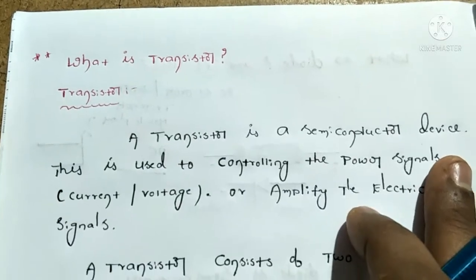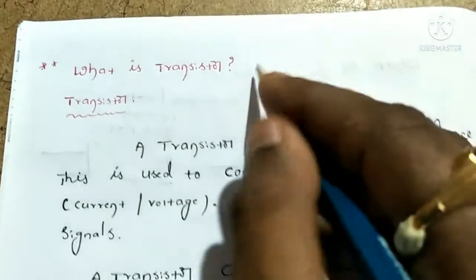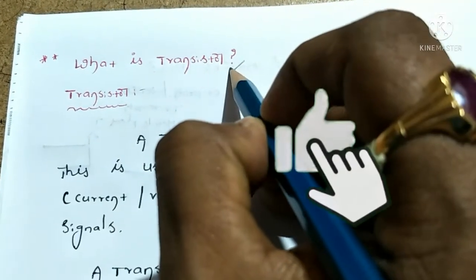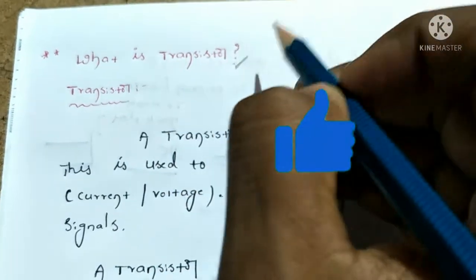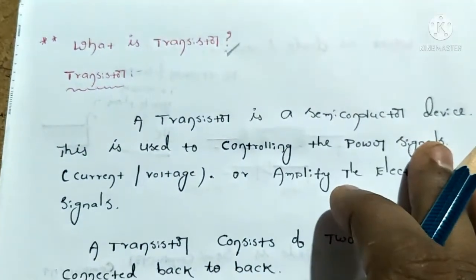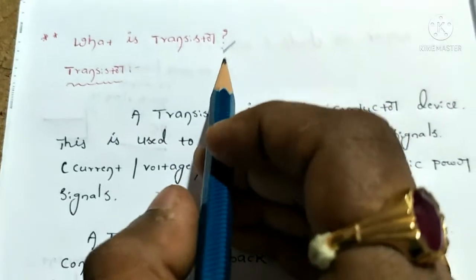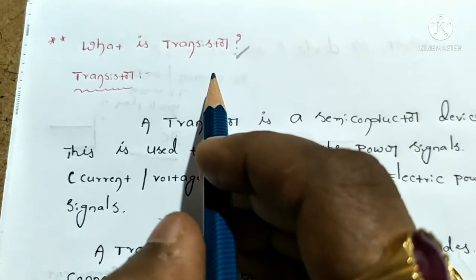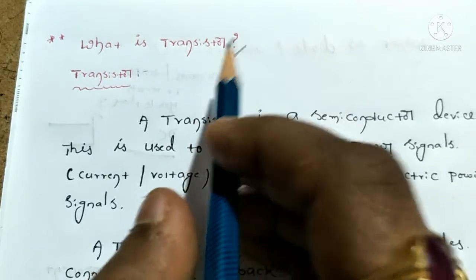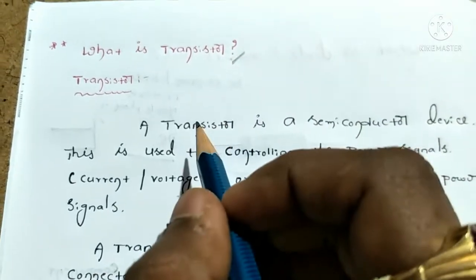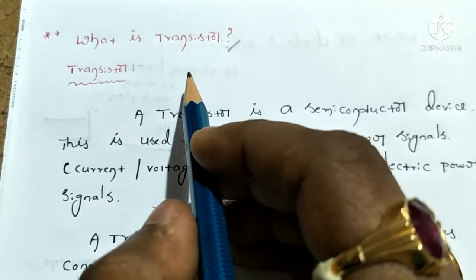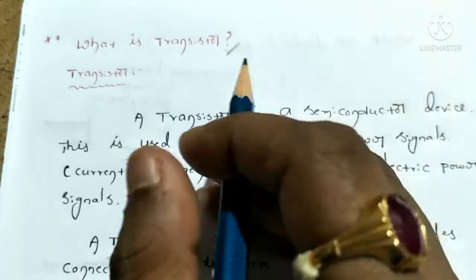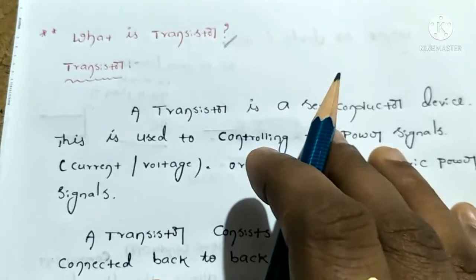Today we will discuss the most important topic: transistors. This is also most important for ECE students and EEE students. This is asked in competitive exams — what is a transistor? Interviews also ask what is a transistor. So, what is a transistor?